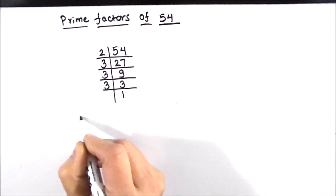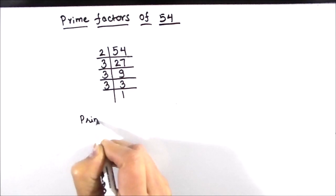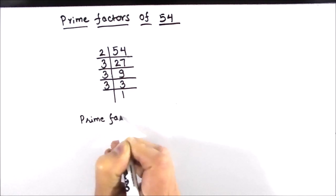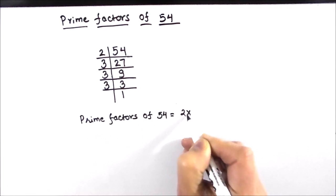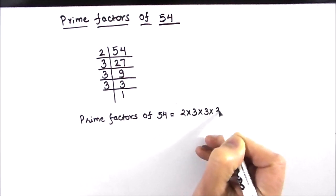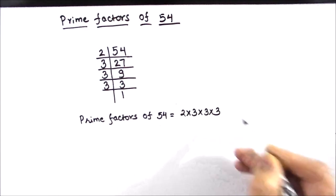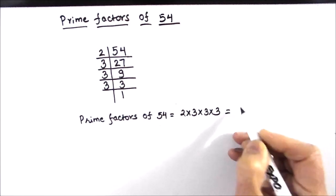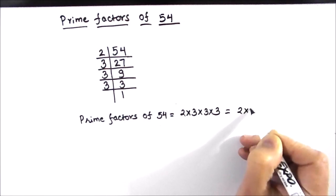So the prime factors of number 54 are 2 times 3 times 3 times 3, or we can write it in terms of exponents as 2 times 3 cubed.